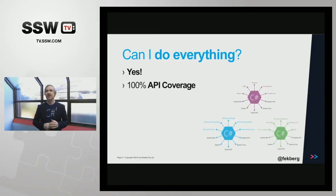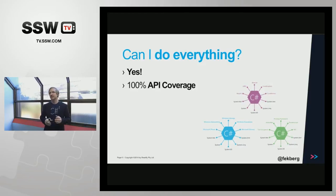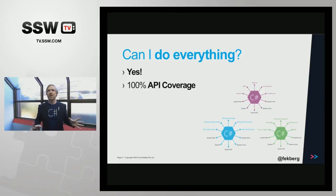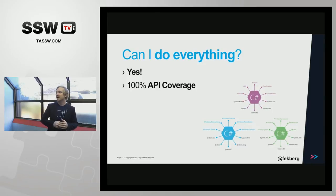They have 100% API coverage for all these different platforms. With Xamarin you get three different projects: one solution with an iOS project, an Android project, and a Windows Phone project. In these different UI projects you can access the native APIs — so you have the NFC API for Android, for instance, because there's no NFC on iPhone yet. And you have different things on the iOS API that you don't have in the Android API.